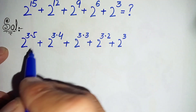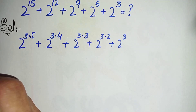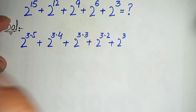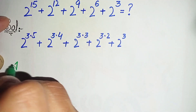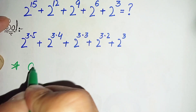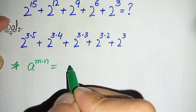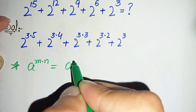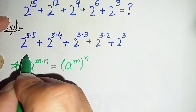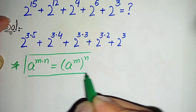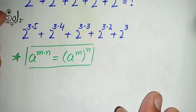In all four terms from the first to the fourth, we will use an exponential math property: a raised to power m×n can also be written as (a raised to power m) raised to power n.